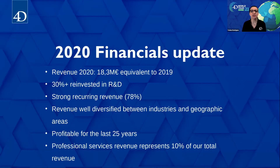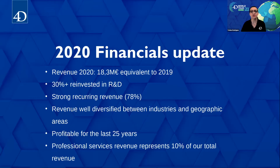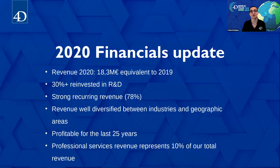Just as important, we continued to invest 30% of our revenue in research and development. Strong recurring revenue of 78% allowed us to continue making large investments in our products and services. Revenue diversified on a regional basis and across many different industries protected us during this global pandemic. Once again, 2020 proved that 4D has built a strong business model which secures your investment, even during difficult times. 4D has now been profitable in each of the past 25 years, with professional services accounting for more than 10% of our revenue stream — 7.4% in 2019 and over 13% in 2021.